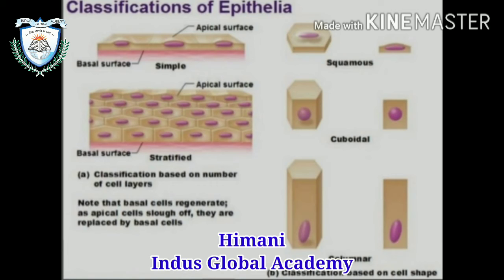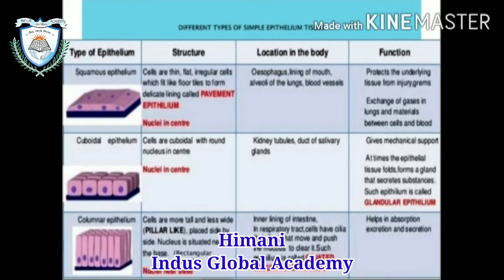Let's discuss each type covering structure, location, and function. First, squamous epithelia. Structure: cells are thin, flat, and irregular, lying like floor tiles to form a delicate lining known as pavement epithelium, with the nucleus present in the center. Location: esophagus, lining of the mouth, alveoli of the lungs, and blood vessels.